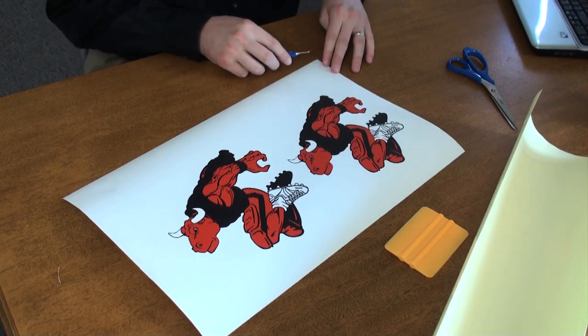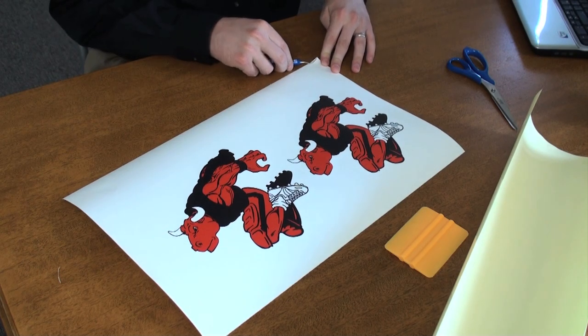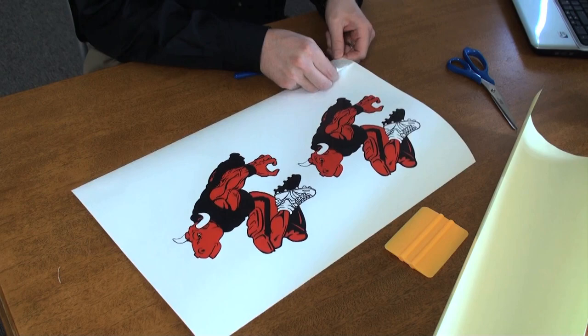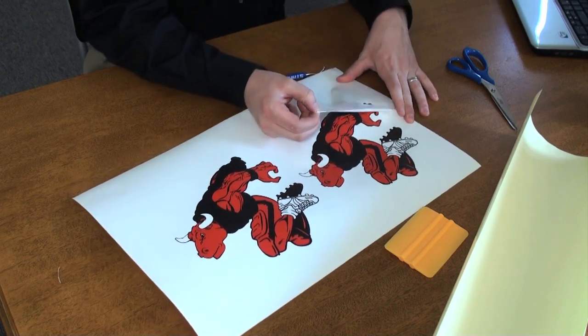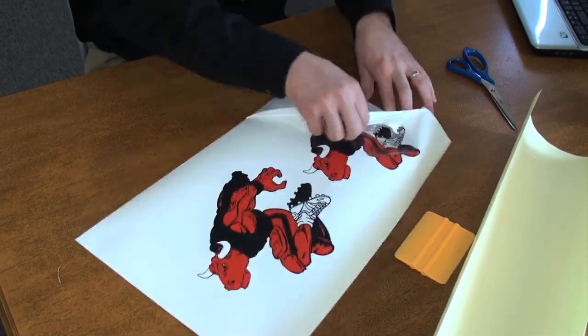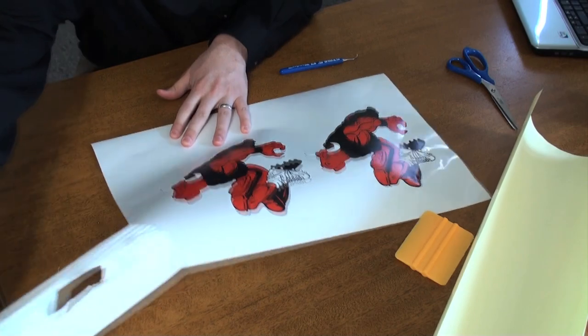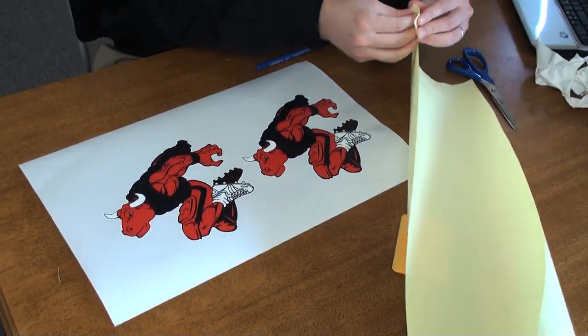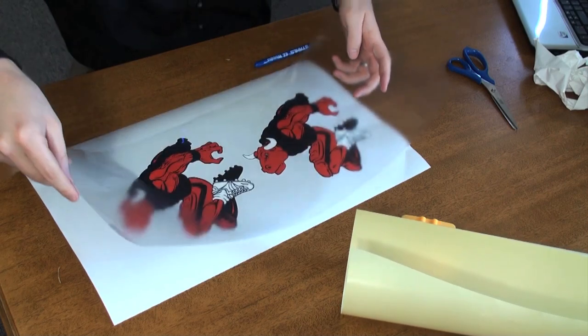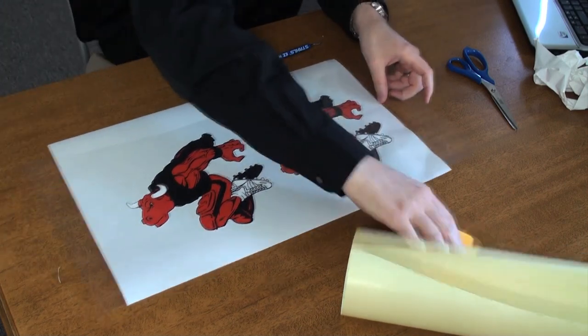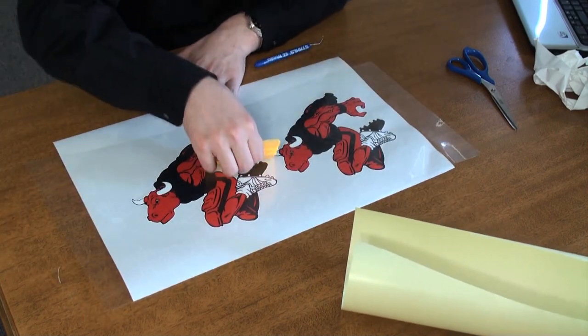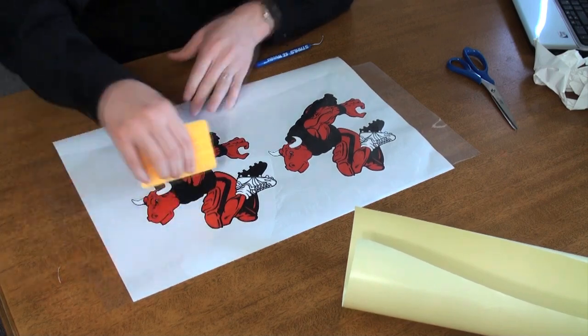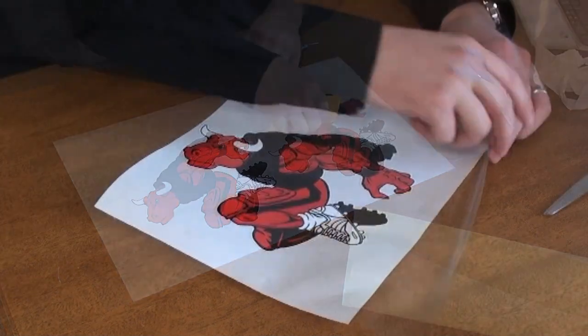To prepare the printed and cut design for application, take the following steps. First, weed away the excess material. Then take the compatible mask and apply it to the top of the design. Use the squeegee to remove any air bubbles, and then lift up your design.